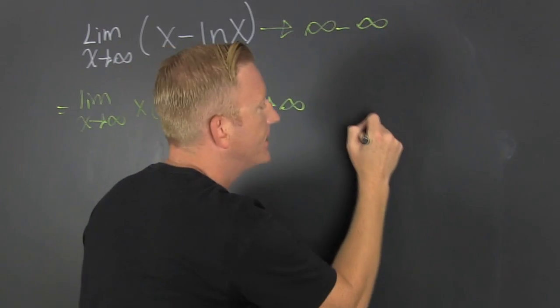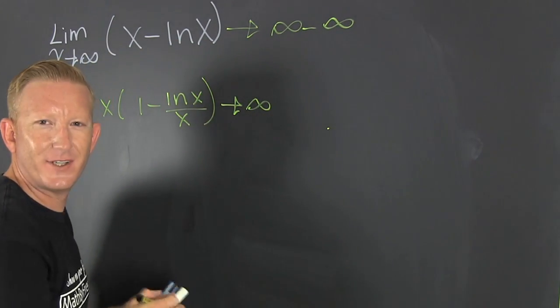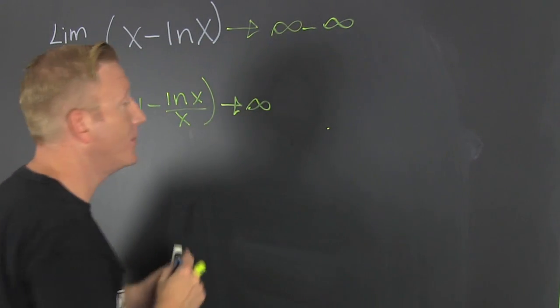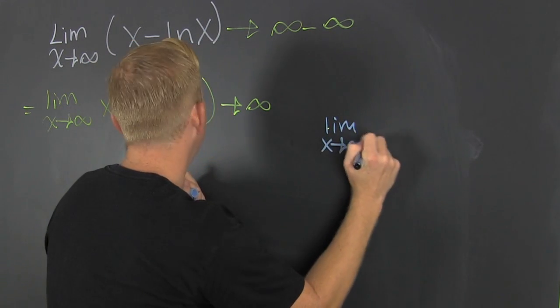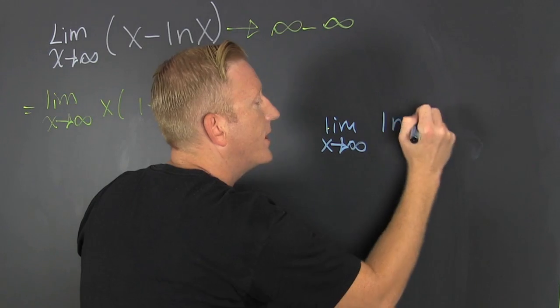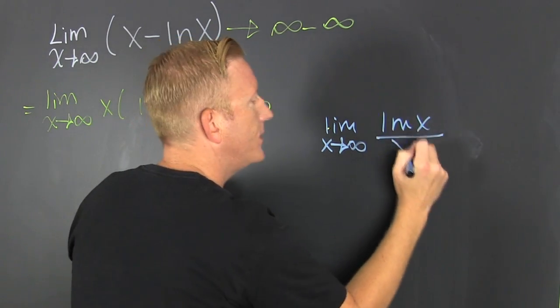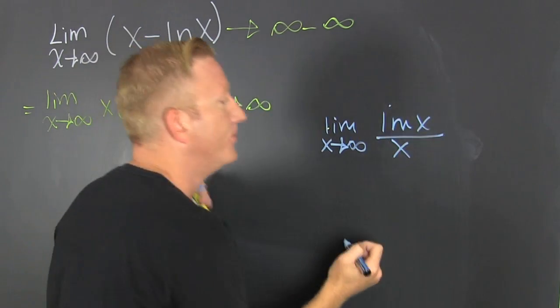But what is... Let's do a different color. Blue! You're my boy, blue. This is the limit as x goes to infinity of the natural log of x over x. Got a little excited there.